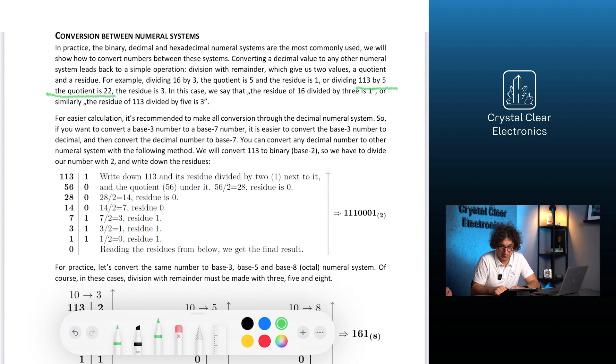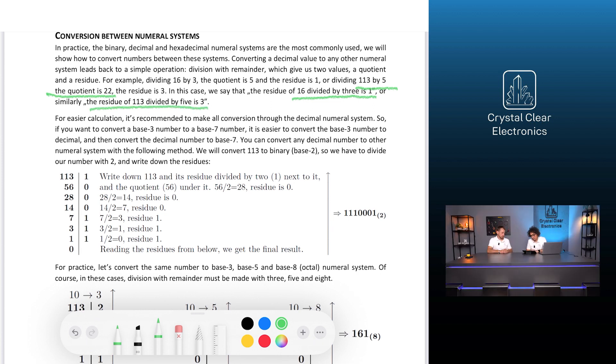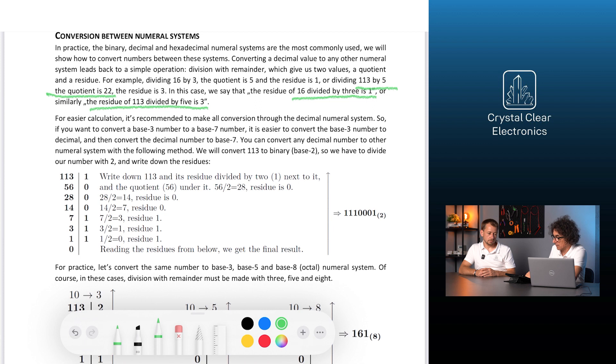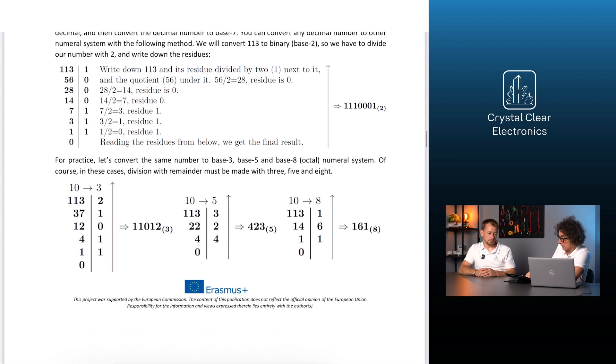In this case, we say that the residue of 16 divided by 3 is 1, or similarly, the residue of 113 divided by 5 is 3. For easier calculation, it's recommended to make all conversions through the decimal numeral system as written below.